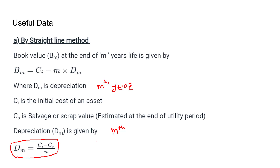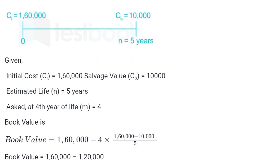I will show this on a line graph. The initial cost was 160,000 and this represents the flow of money over time — an economical term. The salvage value was 10,000 at the fifth year, where n is the life period of the equipment. Since we are asked for the fourth year, m equals 4.